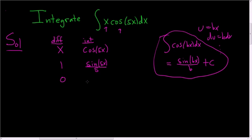Integrating again, we end up with negative cosine 5x. And then again, dividing by 5, we get 25. All right.